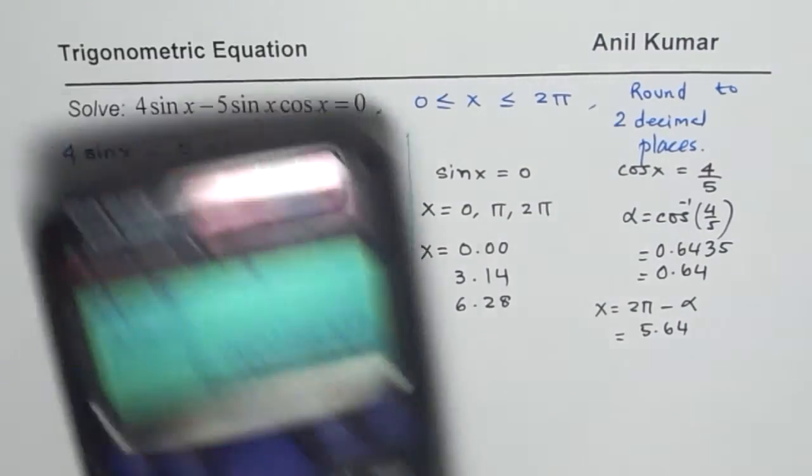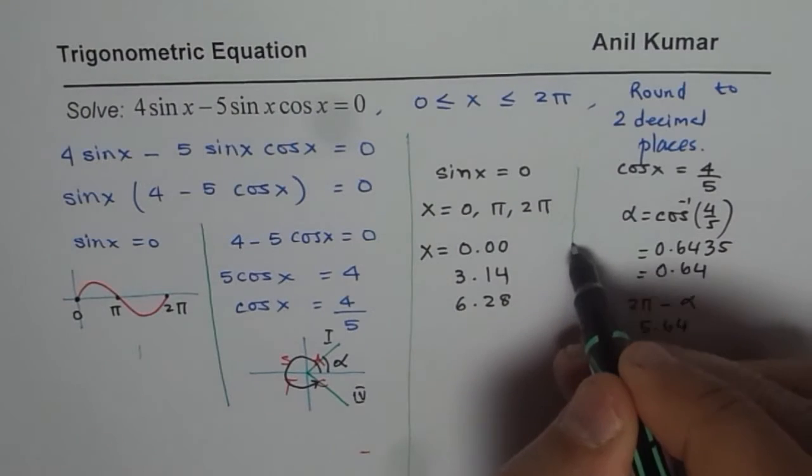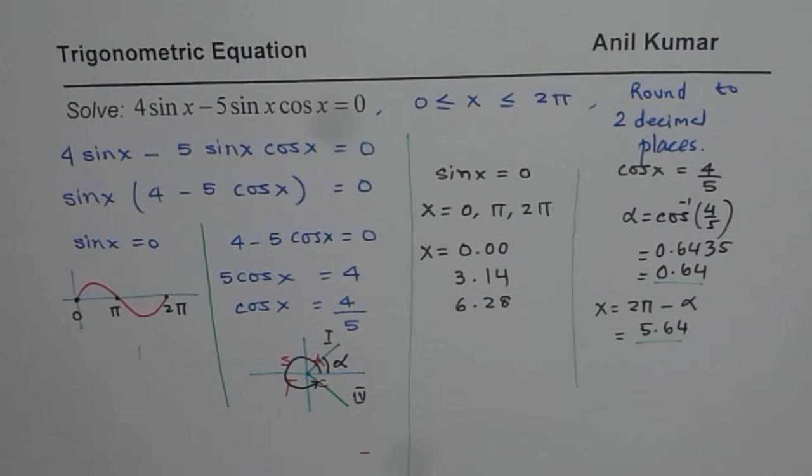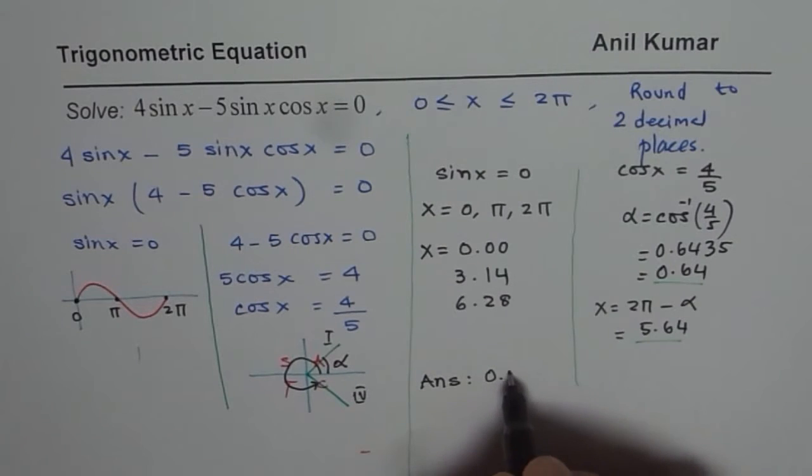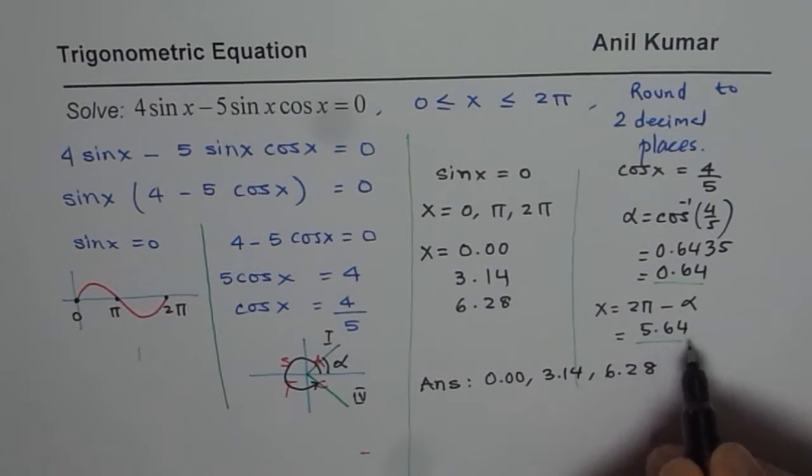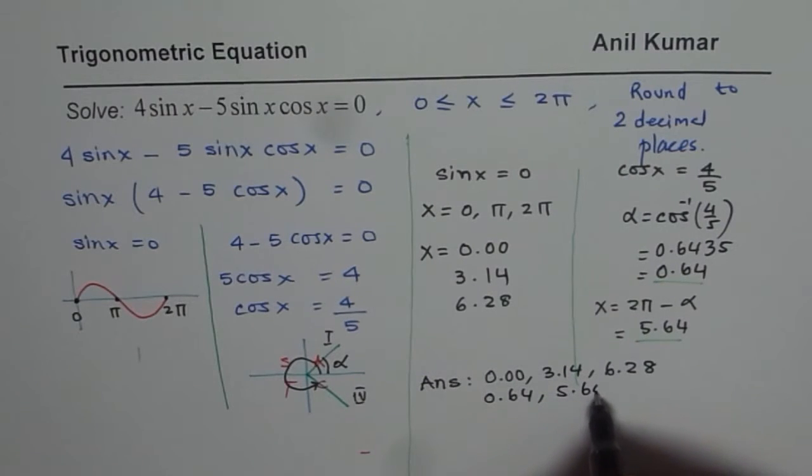So these are the three x values which you get from the first part, and here you get two different solutions. These are your two solutions. At this stage, write down your answer very clearly if you really want full marks. So we get answer as 0.00, 3.14, 6.28, and then we have 0.64, and then 5.64.